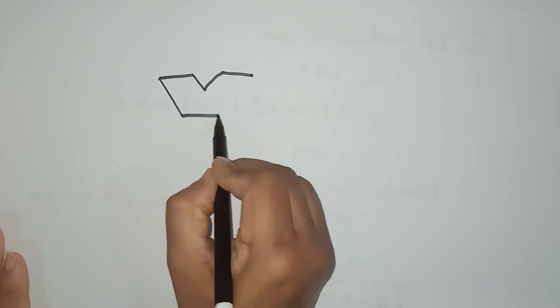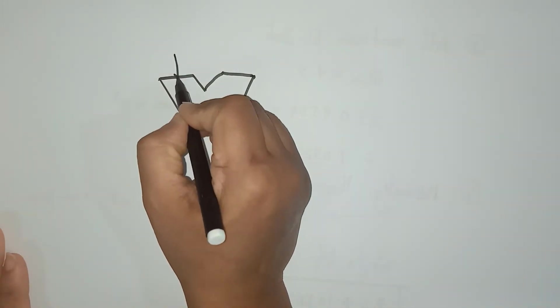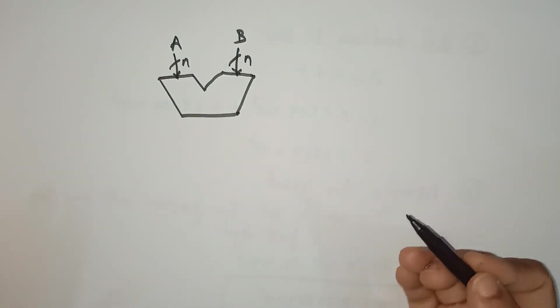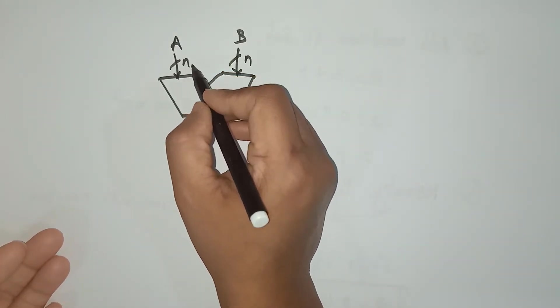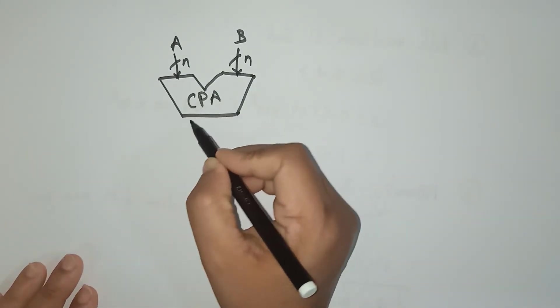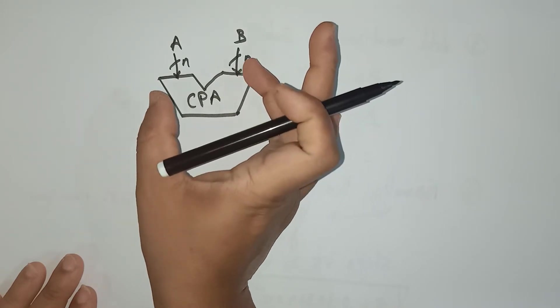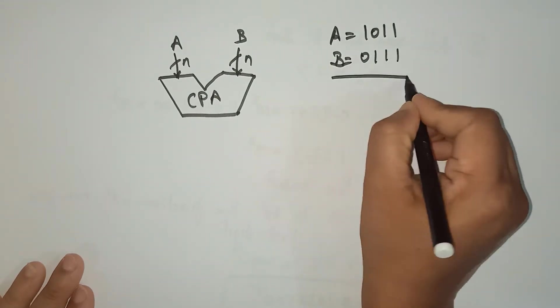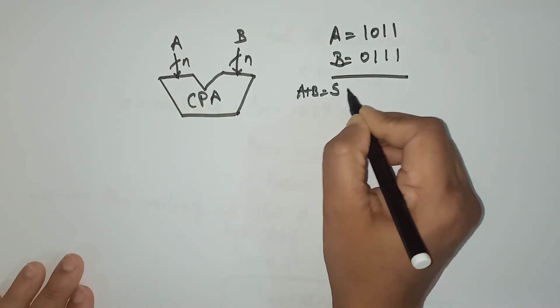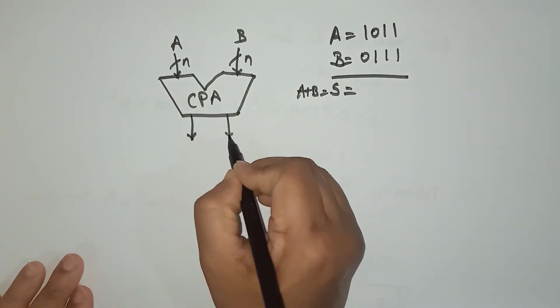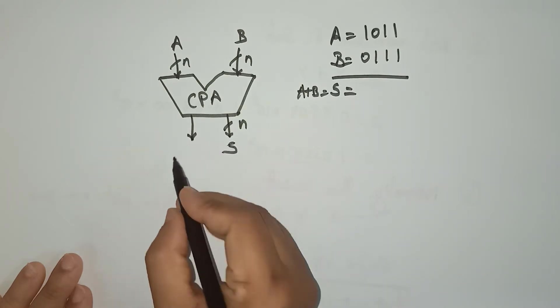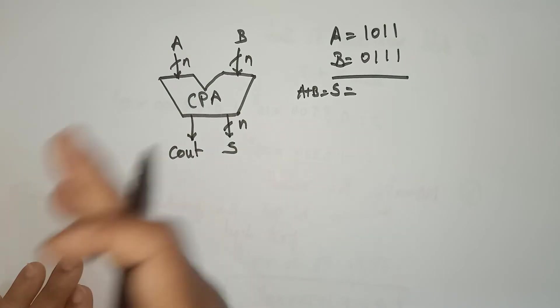Let me draw the circuit. So here we have input A and input B, taking N bits — for example, 3-bit, 4-bit, or 16-bit binary numbers. When A and B perform addition, the result S is N bits. If any carry is generated, it is taken as C-out. For example, A is 4 bits and B is 4 bits; after addition the result is also 4 bits, and any carry is stored in C-out.